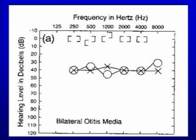Is waqt hearing loss left aur right ear mein mild — yani 40 dB par hai — aur flat hearing loss hai. Upar ki symbols bari bracket left aur right ear ke liye normal hearing thresholds dikhati hain. Jab bhi bone conduction normal hearing thresholds mein aaye, to woh conductive hearing loss hoga. Yahan bilateral otitis media hai — basically middle ear dysfunction — aur yeh mild conductive hearing loss bilateral otitis media ki wajah se hai.